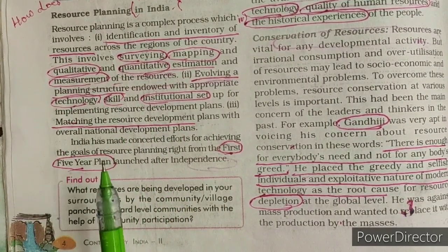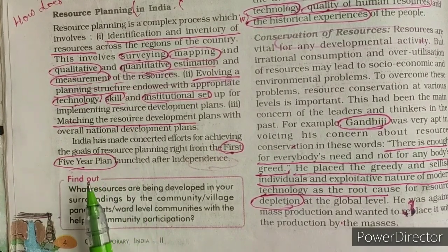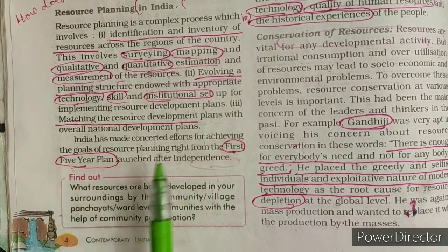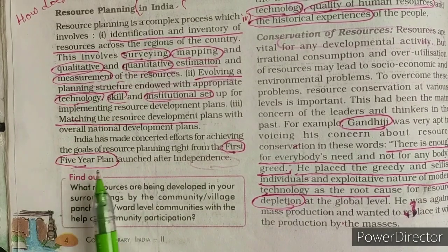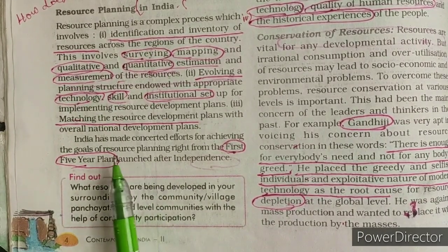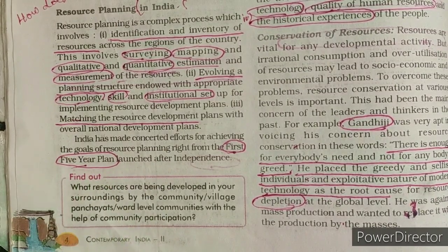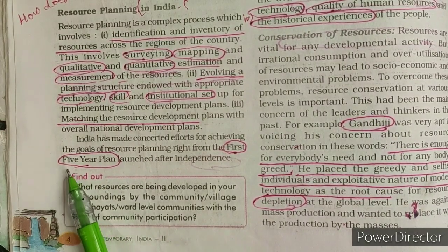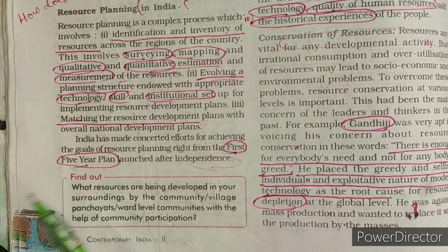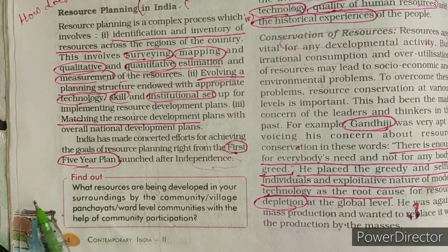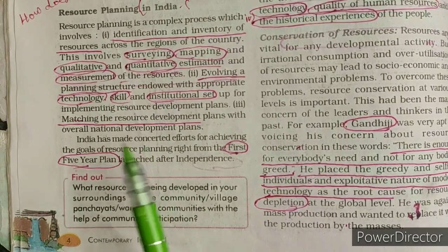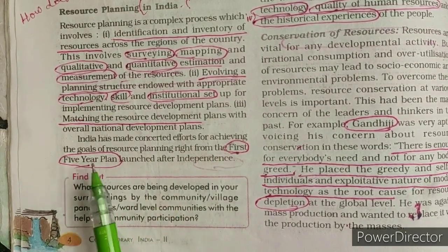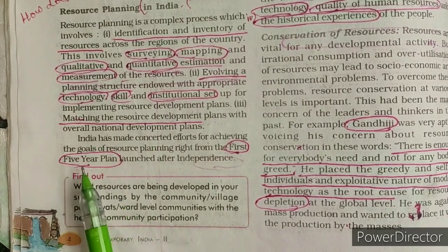The Government of India has been trying to plan resources from the very first Five-Year Plan, when our first government was formed. In every Five-Year Plan, the government sets one particular goal — for agriculture, industries, or any particular sector or purpose. Resource planning in India has been implemented from the very first Five-Year Plan.